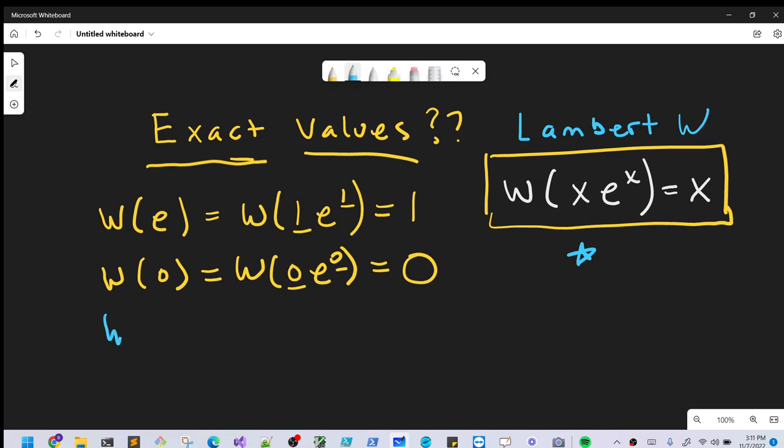And of course we could do this kind of thing all day. We could have Lambert W of 2e to the 2, it's going to be 2, or say e times e to the e, it's just going to be e, or pi times e to the pi is going to be pi. We could go on and on.